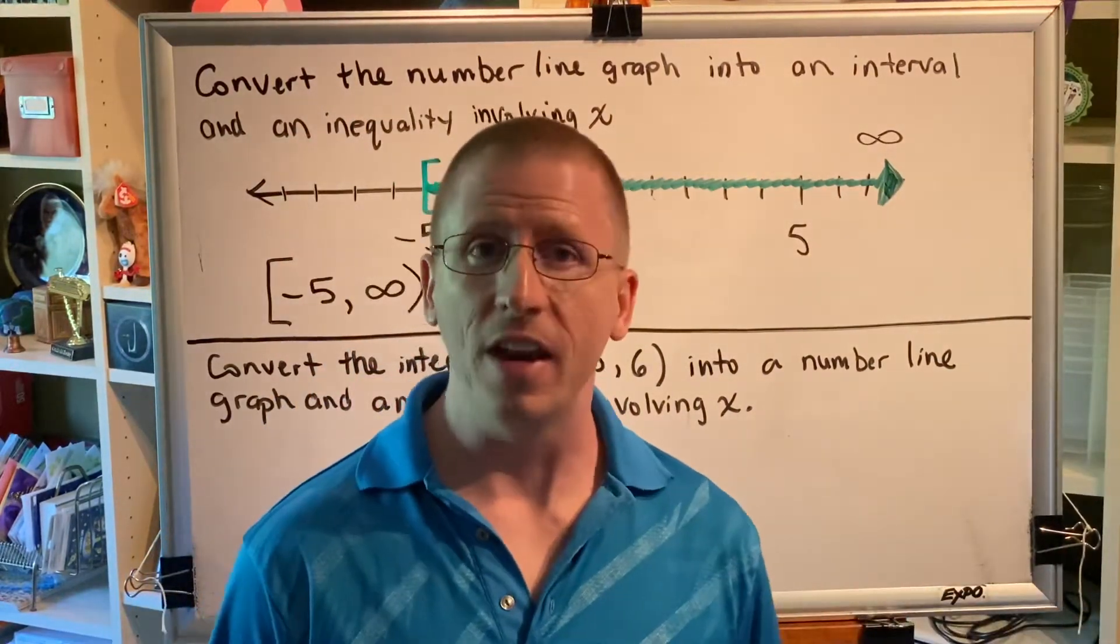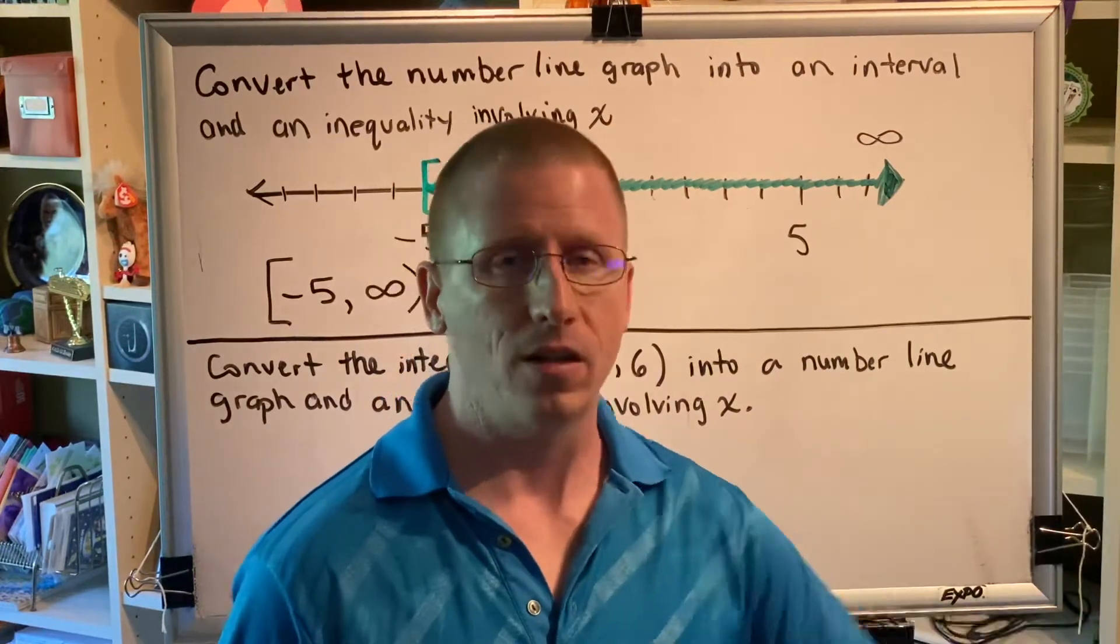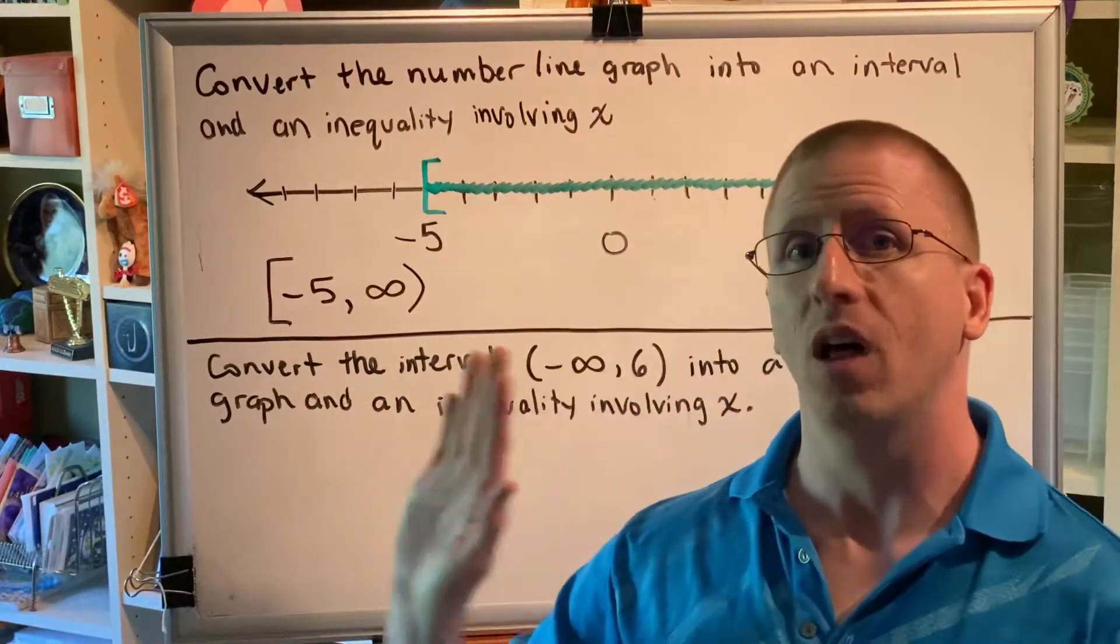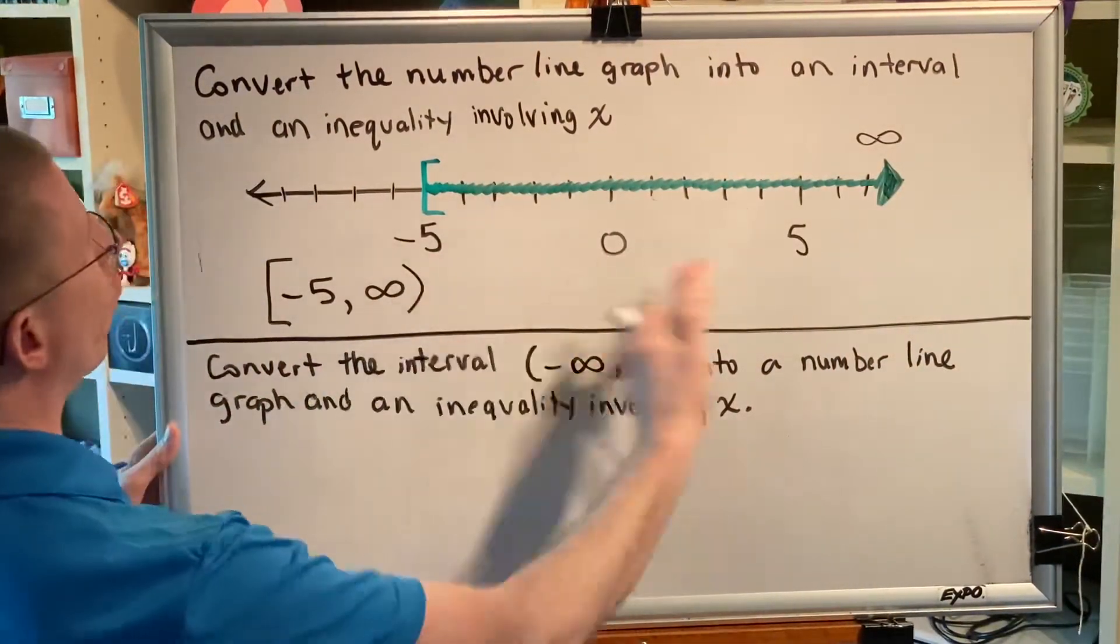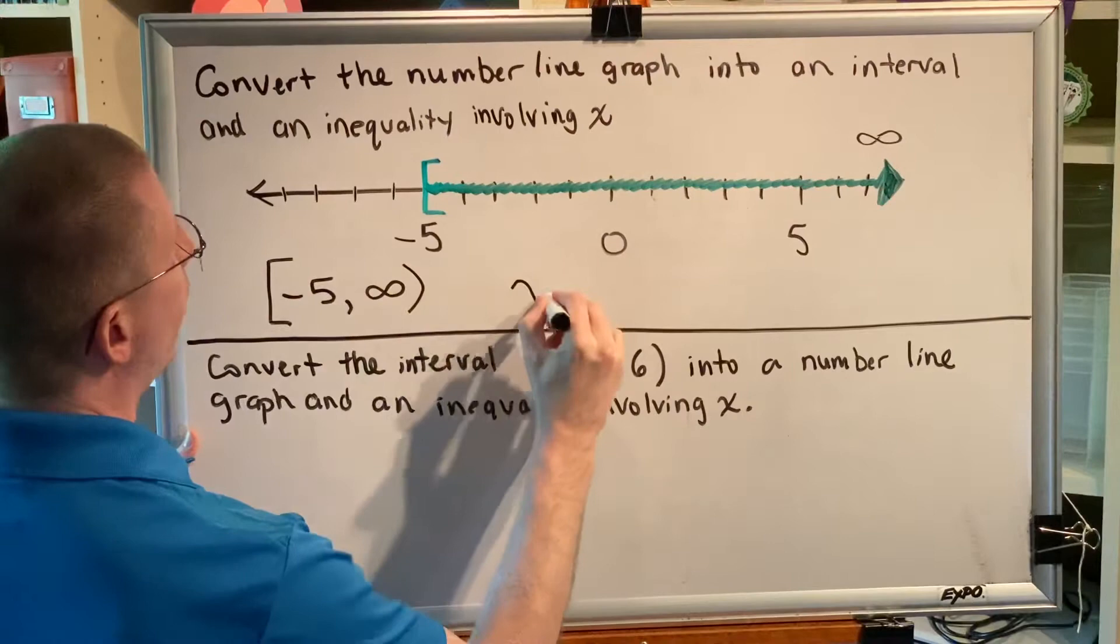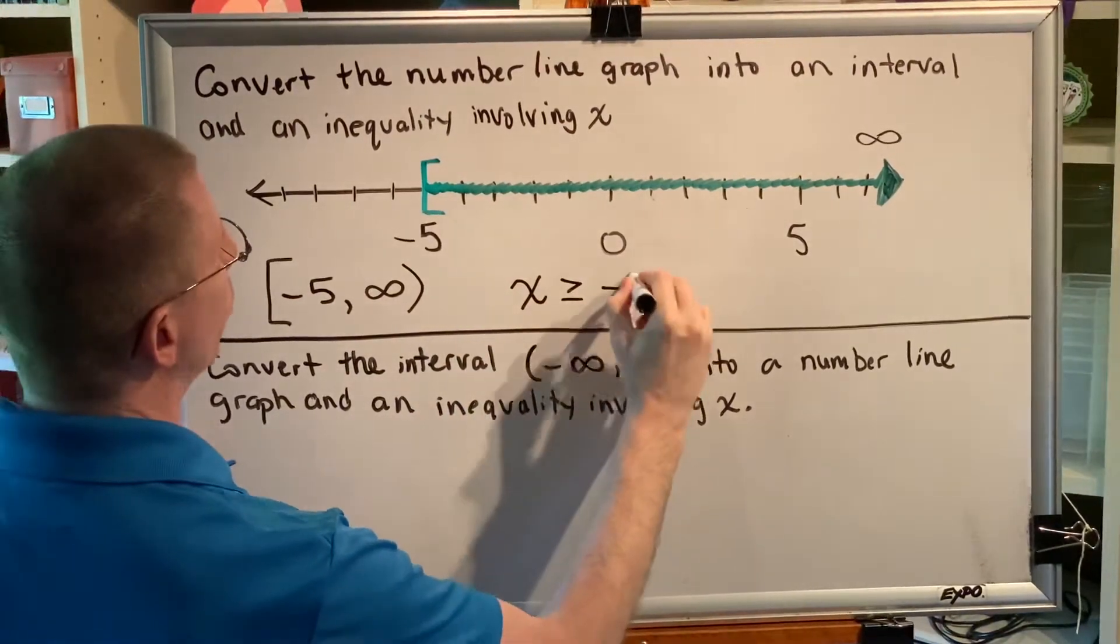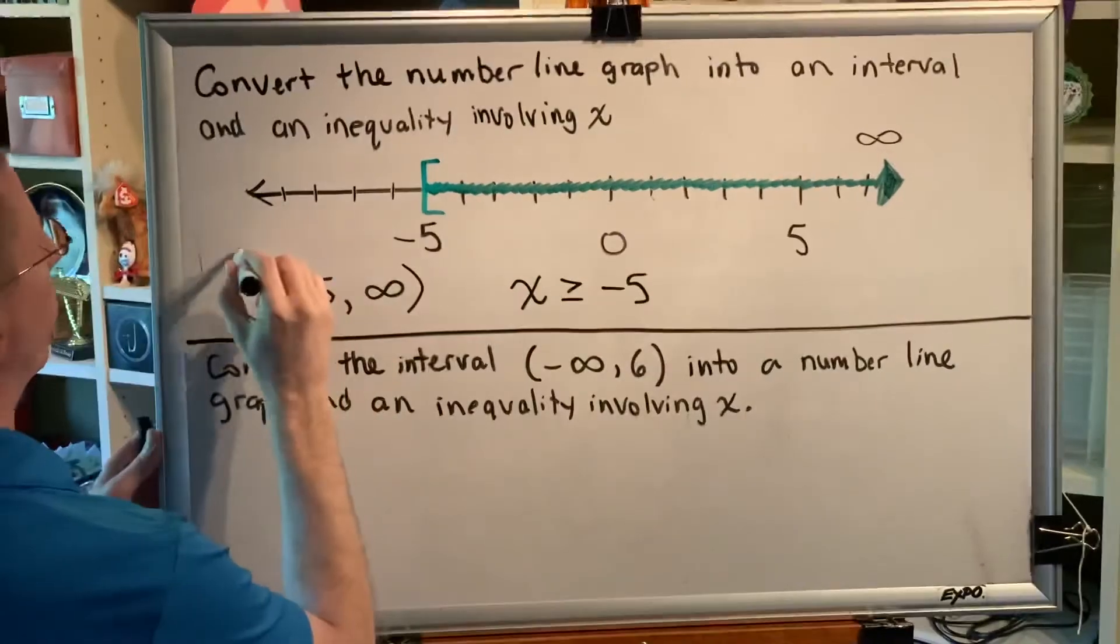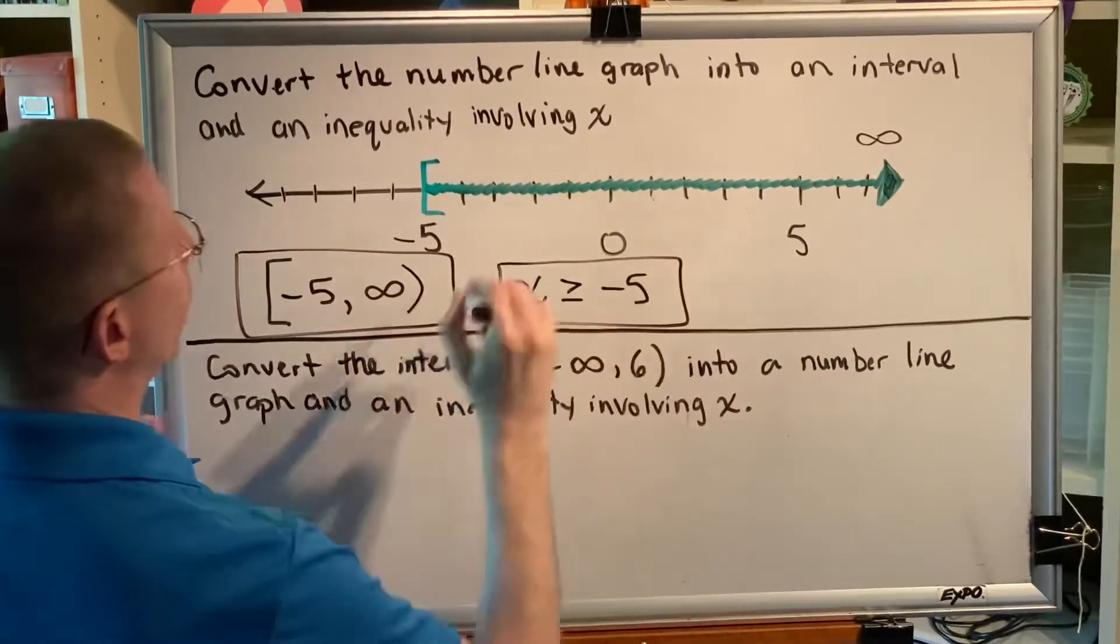Greater than to the right, less than to the left. So greater than negative 5, we would write the inequality x is greater than or equal to negative 5. All right, so these are our two answers for the top problem.